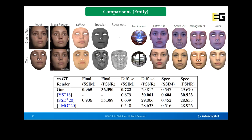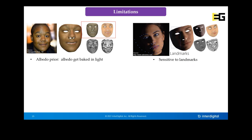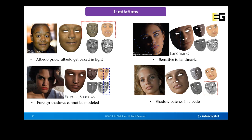We show some limitations. First, we may sometimes bake some albedo into the estimated light due to limitations of the statistical albedo prior space, which cannot model all skin types — particularly for people of color, where the estimated albedo may be incorrect. Second, our method relies on landmarks to initialize and guide optimization; inaccurate landmarks can cause the method to get stuck in a bad local minimum with inaccurate estimated shape. Third, our method cannot model foreign or external shadows, which may get baked into final albedos. Finally, inaccurate estimated light and shadows may produce shadow patches in the estimated albedo; increasing regularizer weights can help but may sacrifice albedo details.